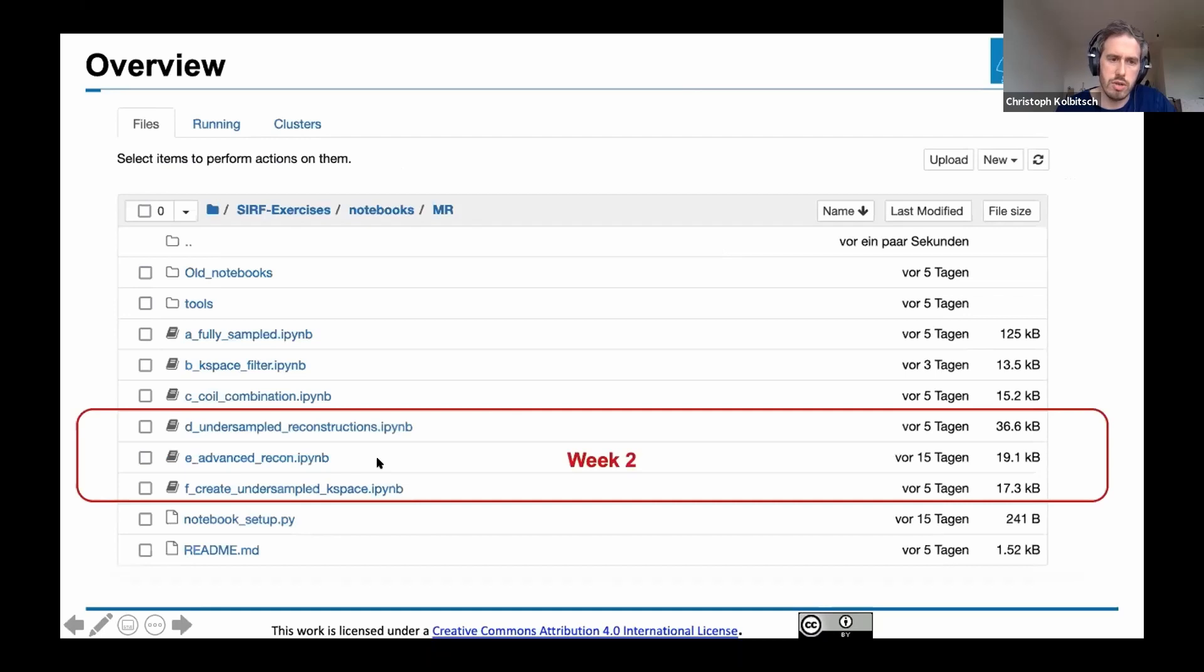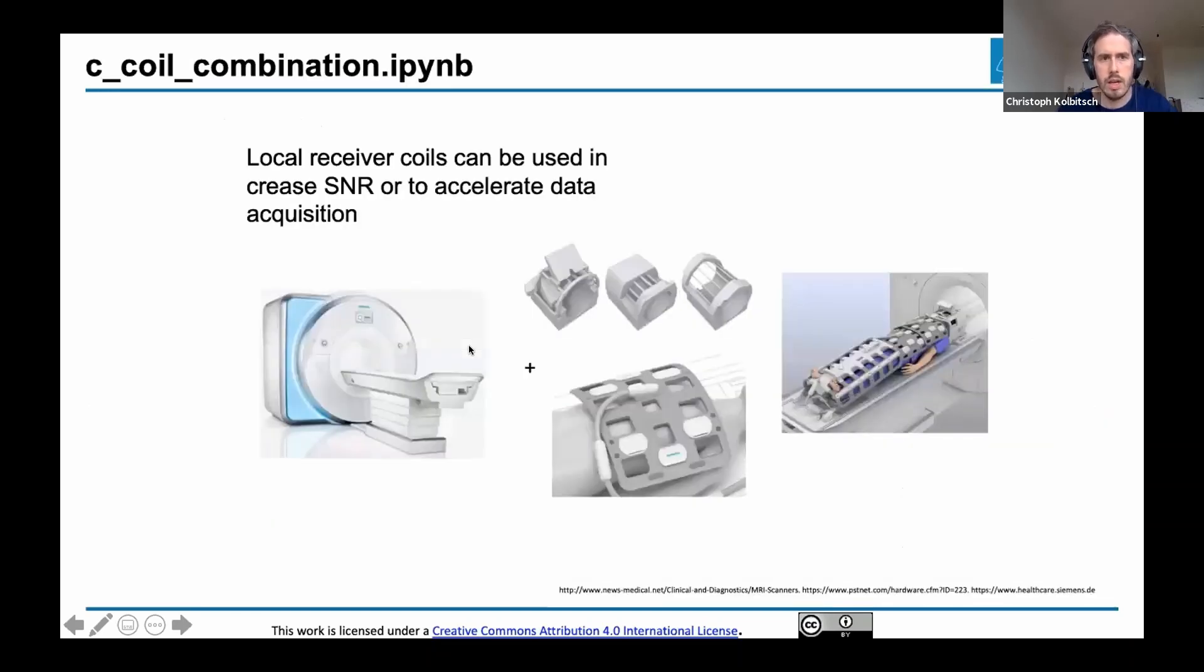For this week, the second week, we move on to iterative reconstruction. It's all about undersampled reconstructions and how we can get good image quality. There are three notebooks: undersampled, advanced recon, and create undersampled k-space, which shows more tools needed for the third week when we do synergistic image reconstruction.